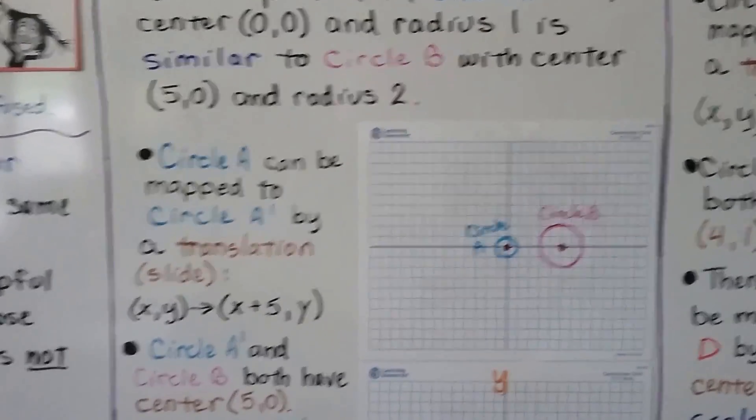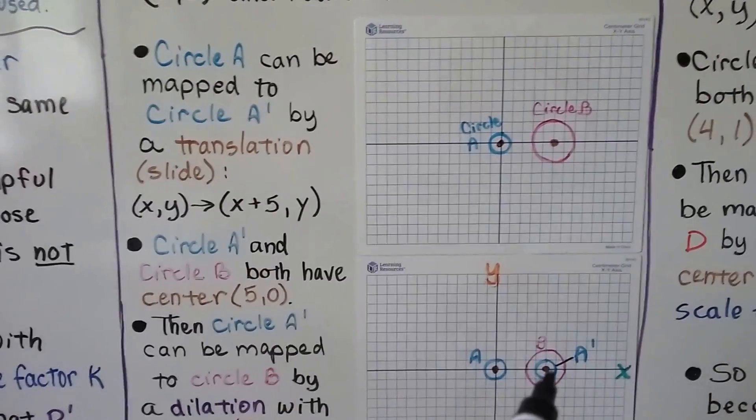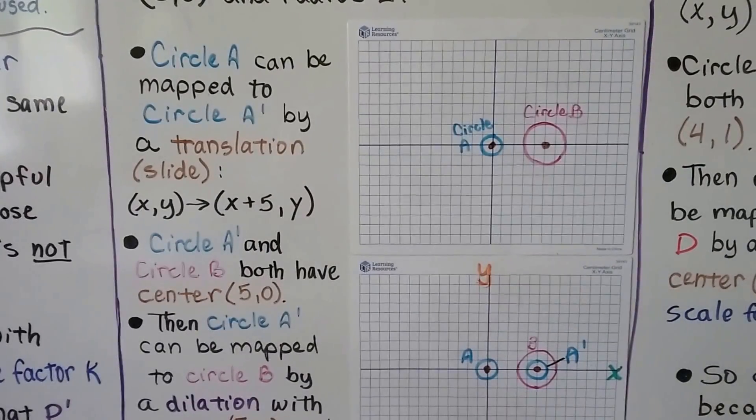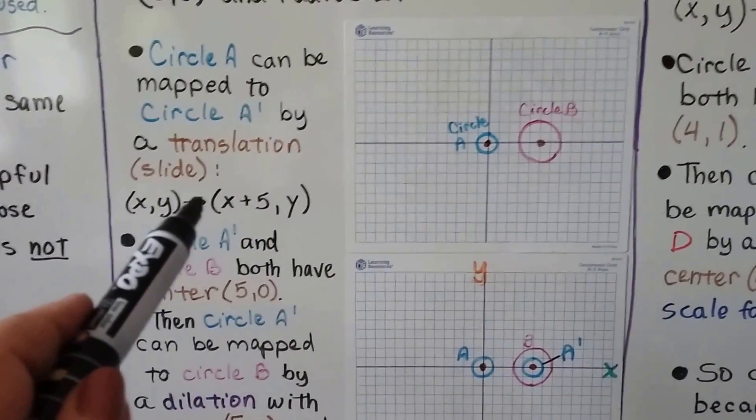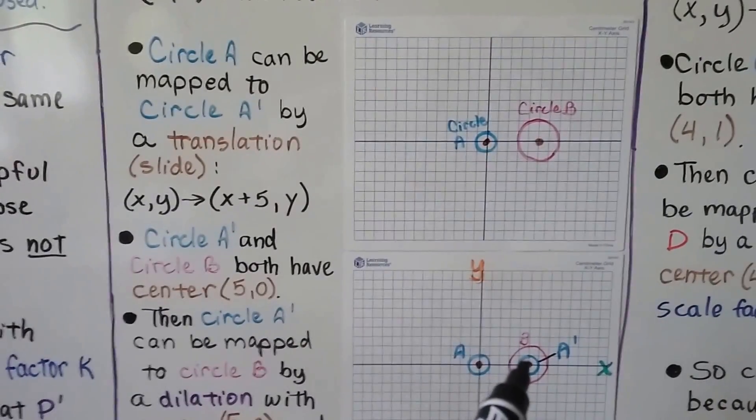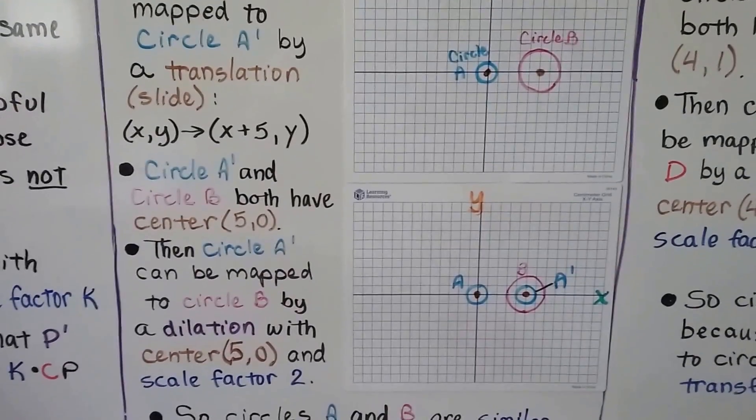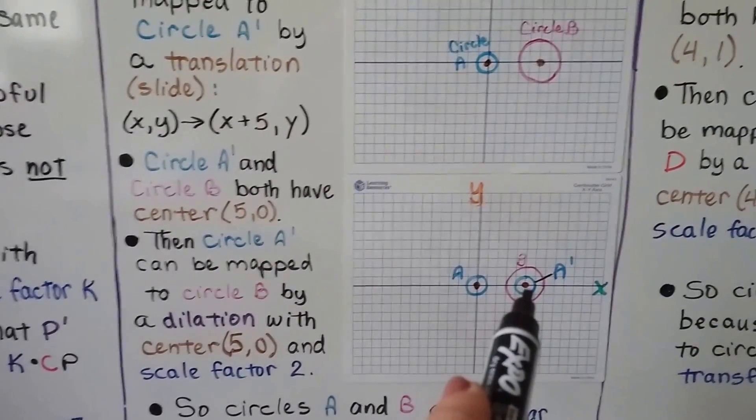Circle a can be mapped to circle a prime over here by a translation, a slide. x, y would translate to x plus five, y. And circle a prime and circle b both have a center of five zero.